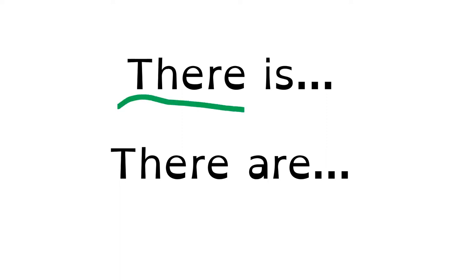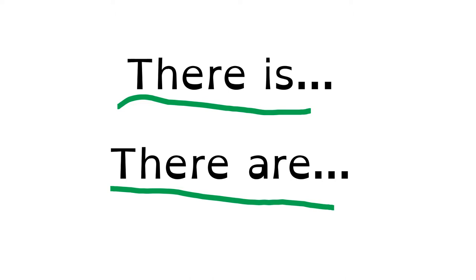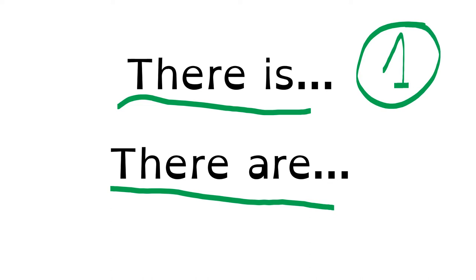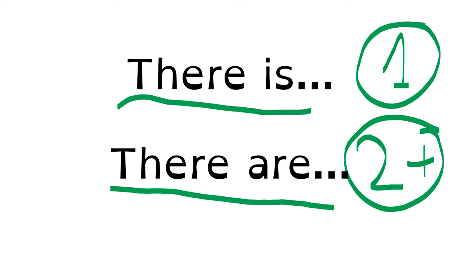Hello! In this unit we are learning about parts of the house and furniture, and today we are going to introduce a new grammar structure: there is and there are. We use there is to say that one thing exists or that I can see one thing. And we use there are to say that two or more things exist or that I can see two or more things.